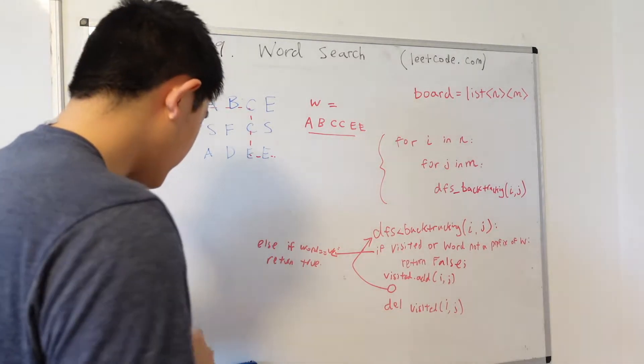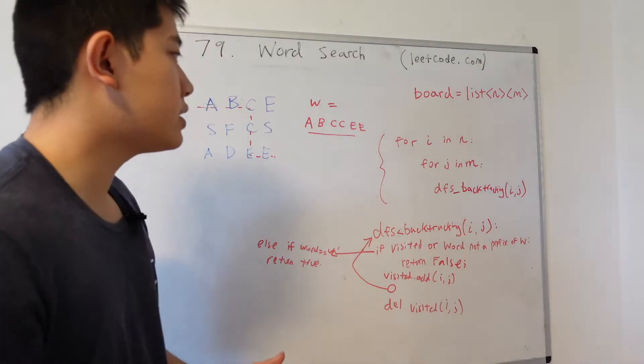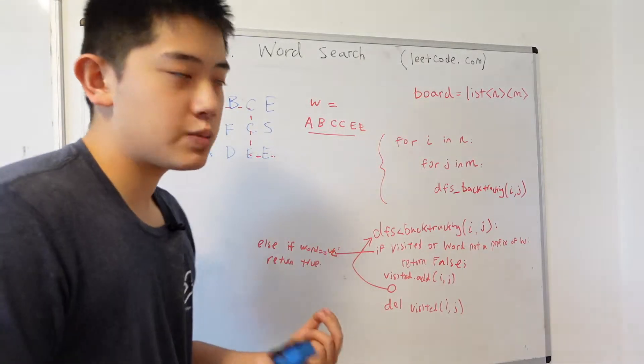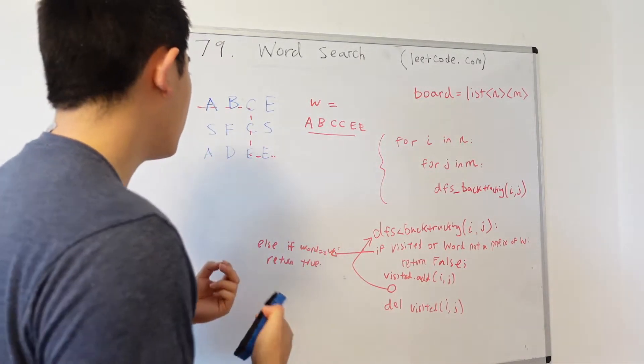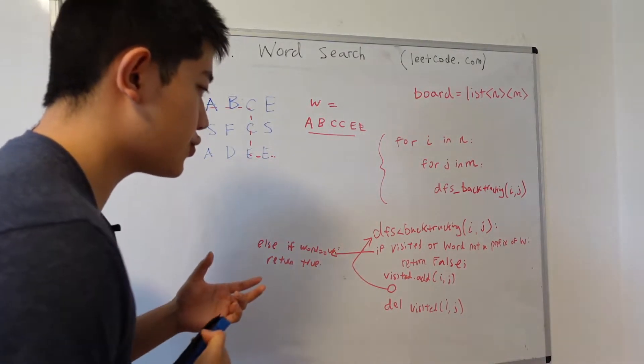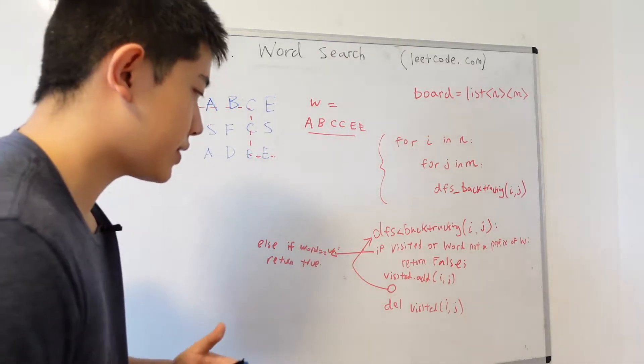Pretty simple, right? Now this question is clearly a depth first search algorithm problem. The tricky part of this problem though is figuring out which nodes to begin a depth first search on and how we're going to keep track of the visited nodes set and everything like that.